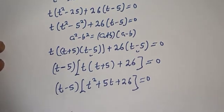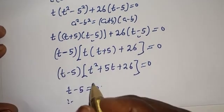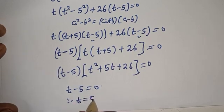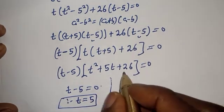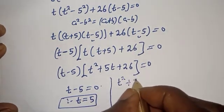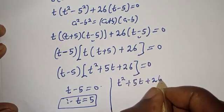There are two cases here. Case one: t minus 5 is equal to 0, therefore t is equal to 5.